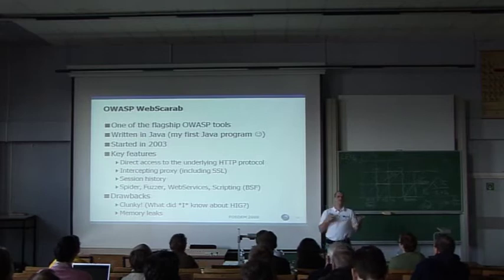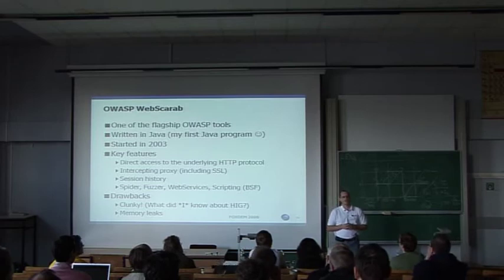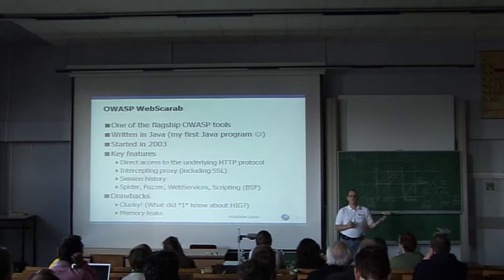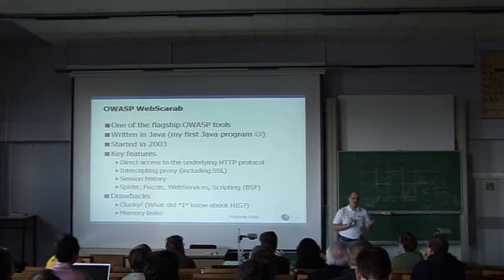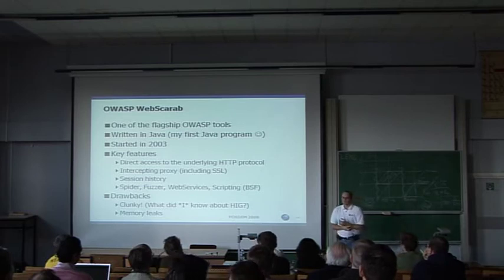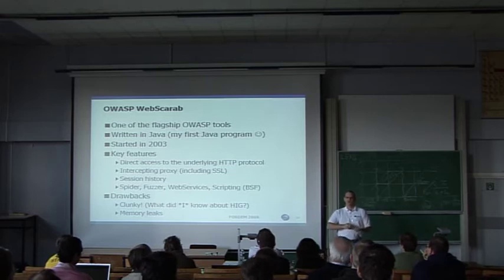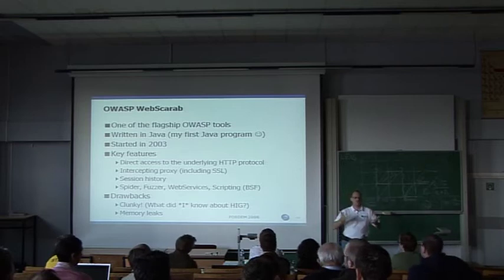Some of the key features of WebScarab: basically it gives you direct access to the underlying HTTP protocol. When you're programming to an API, that API is shielding you from the underlying wire protocol — what's actually going across the wire. You call a J2EE API like getCookie or getSession, but it's actually setting a header with 'Set-Cookie: JSESSIONID=something' being sent across the wire at a fundamental level. Being able to see that, and seeing that hidden fields are no different to a regular field when sent in a POST request, highlights why you shouldn't be relying on hidden fields.